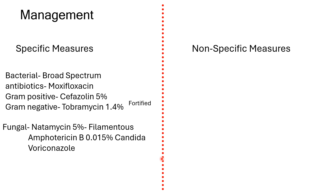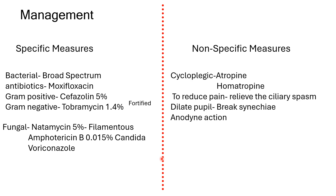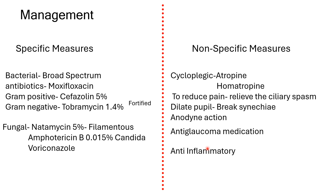For fungal keratitis: natamycin 5% for filamentous fungi and amphotericin B 0.015% for Candida; voriconazole acts on both filamentous and non-filamentous fungi. Non-specific measures are very important: cycloplegics such as atropine or homatropine reduce pain by relieving ciliary spasm, dilate the pupil to break synechiae, reduce risk of angle-closure glaucoma, and improve penetration of other drugs.